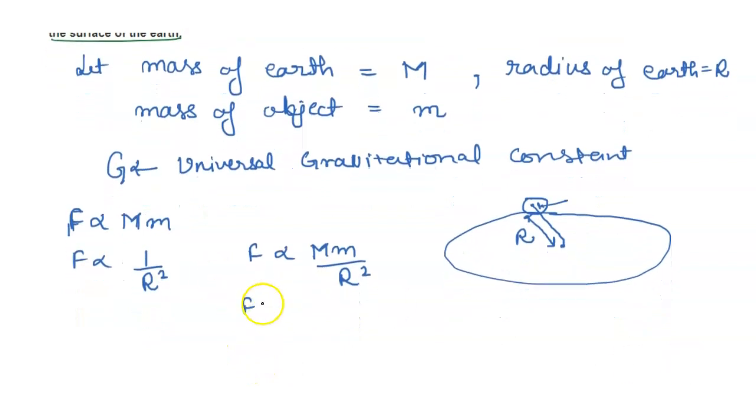Remove the proportionality sign and we get F equals GMm upon R squared, which is the required formula for finding the magnitude of gravitational force. Thank you very much.